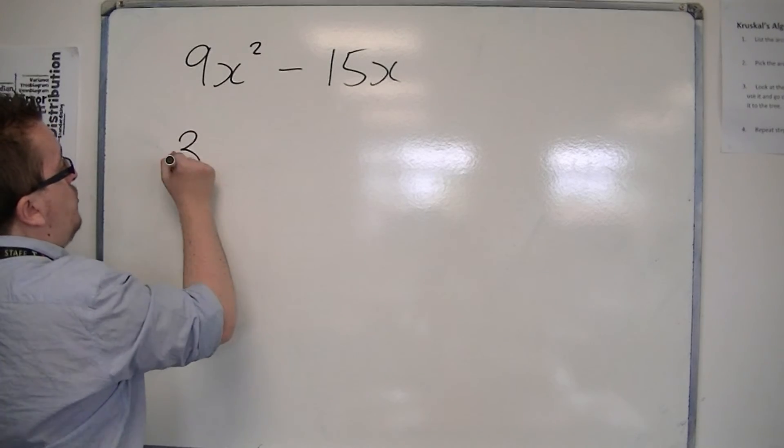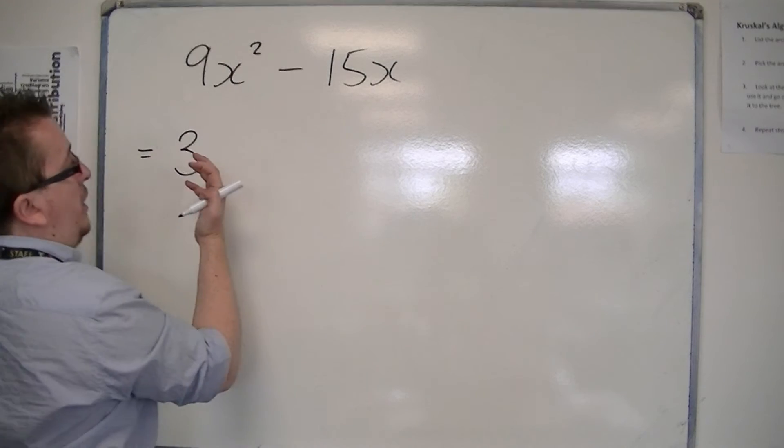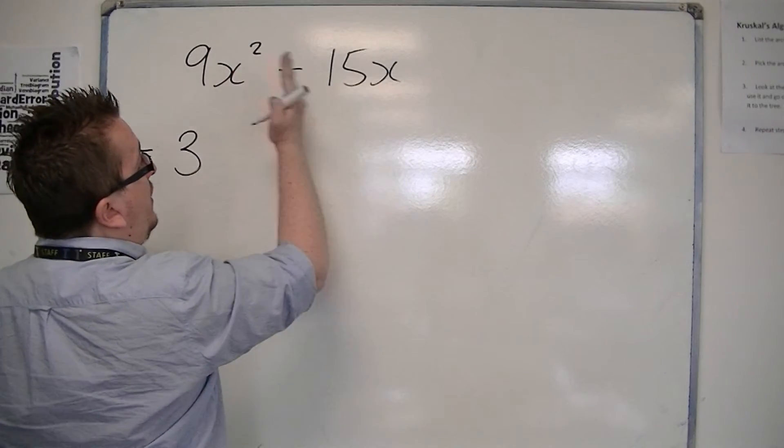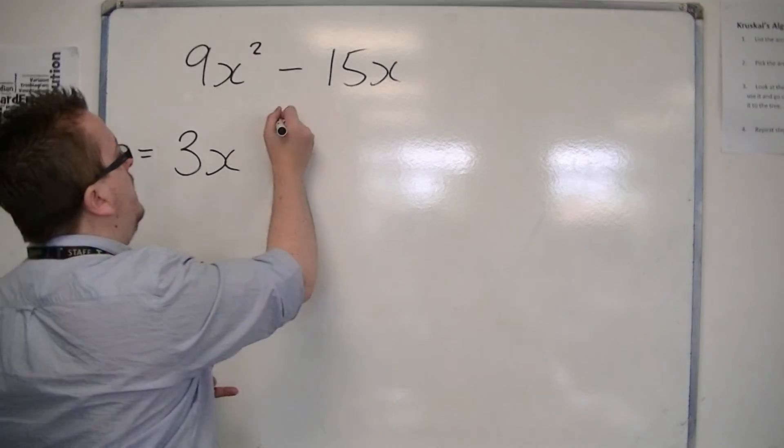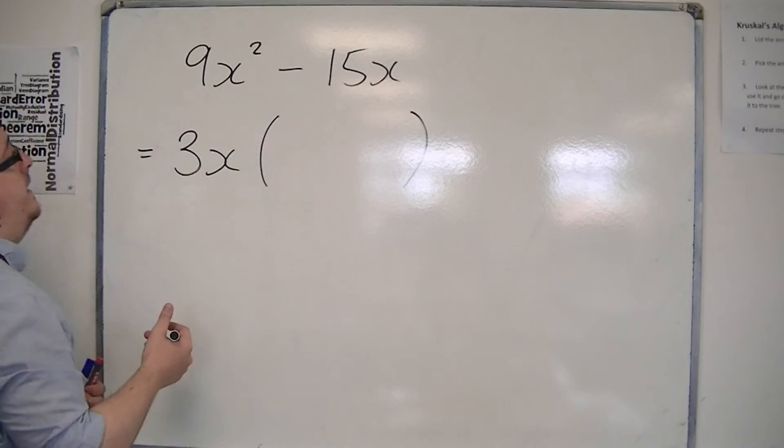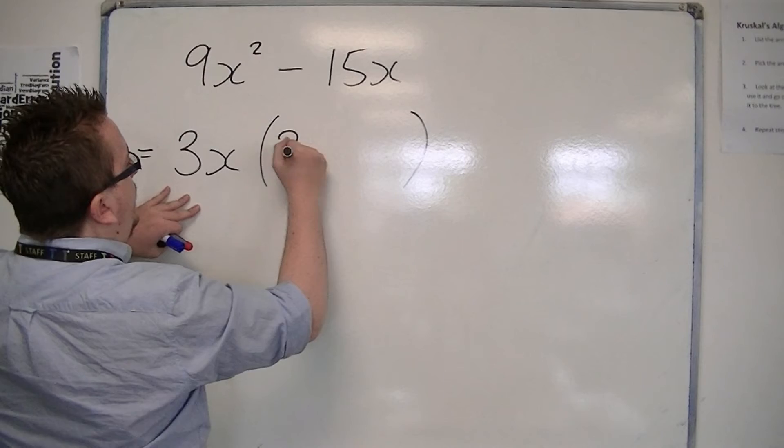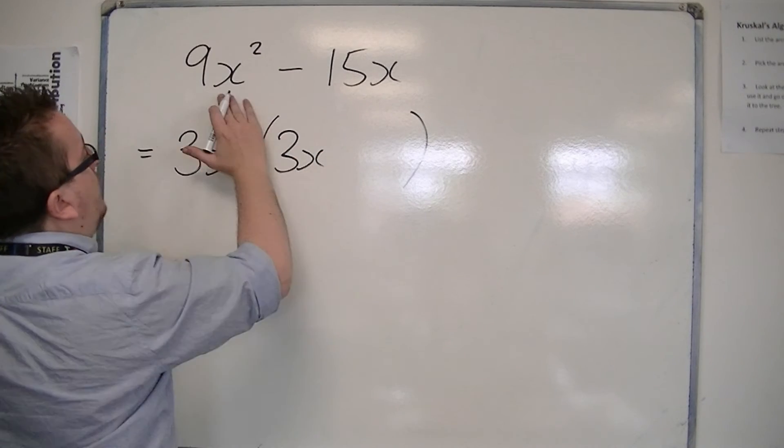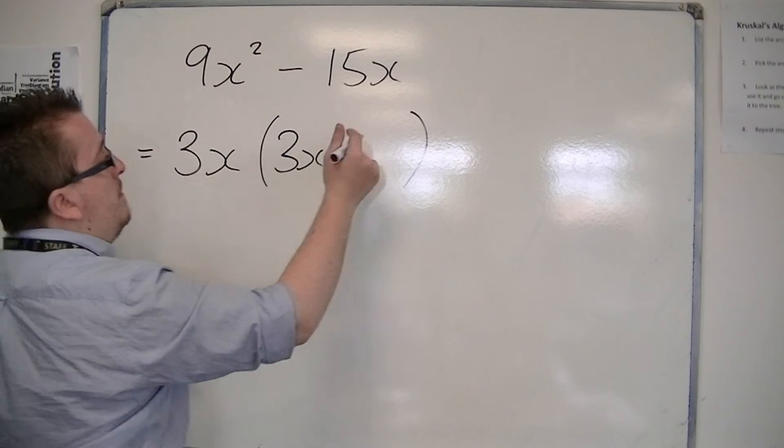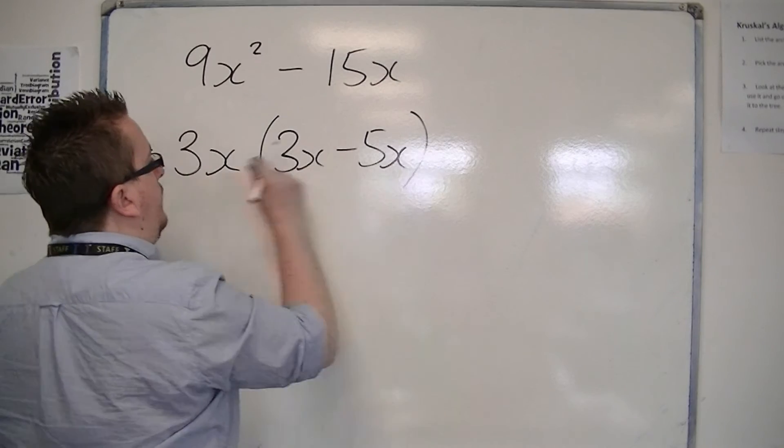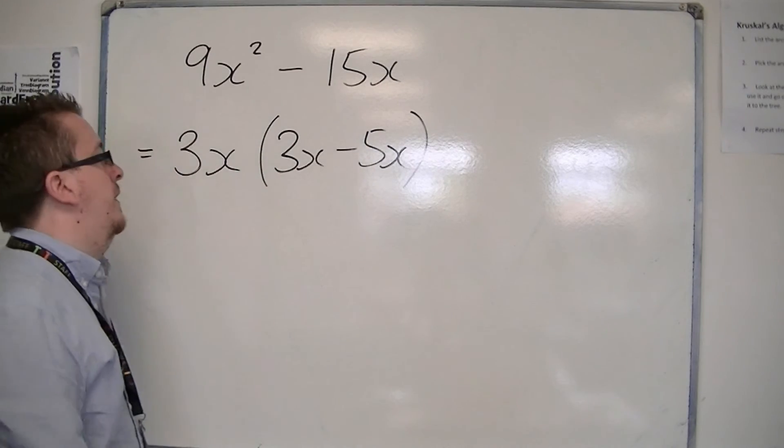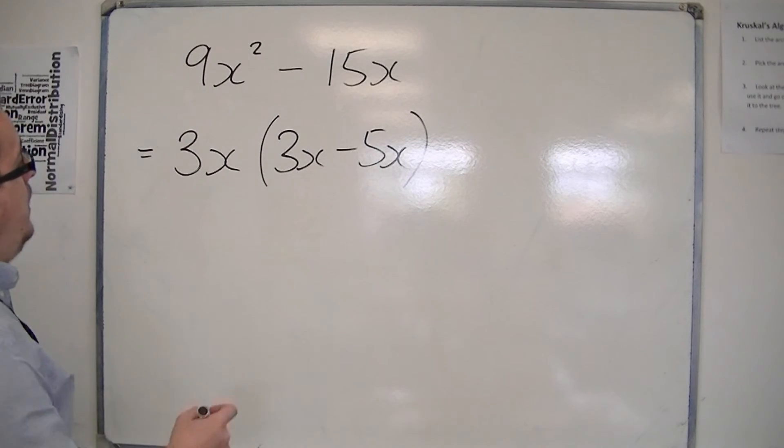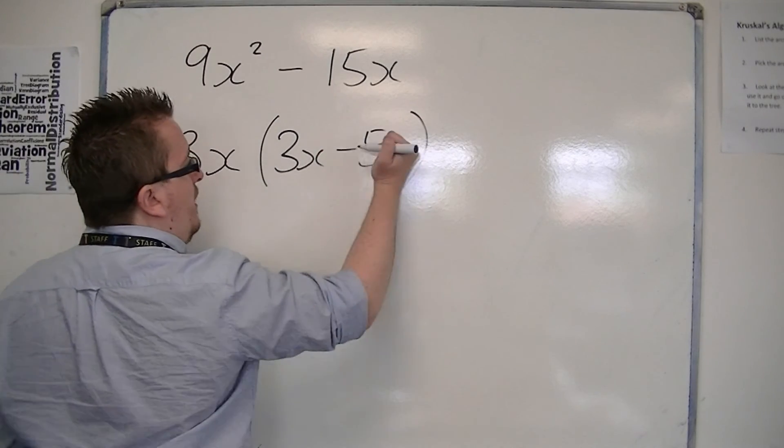So I can say that the 3 can come outside of the bracket, and also because they both have an x in common, that can also come outside of the bracket. So that inside the bracket we would have 3x, because 3x times 3x would make 9x squared, and minus 5, because 3x times minus 5 makes the minus 15x.